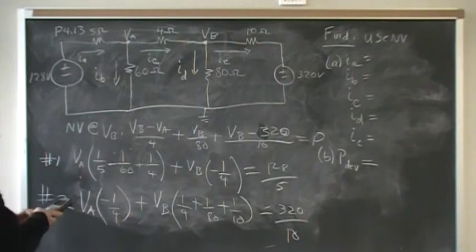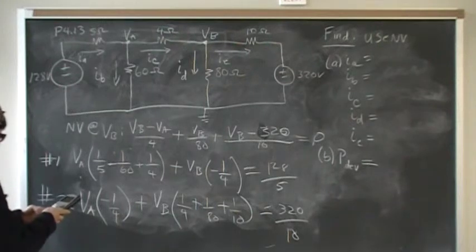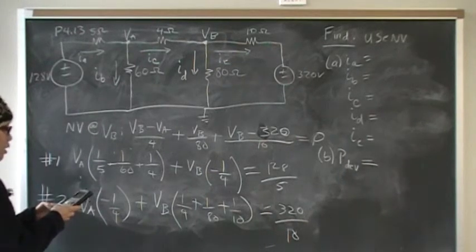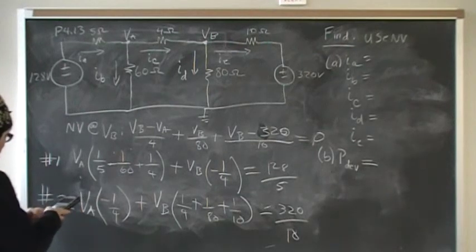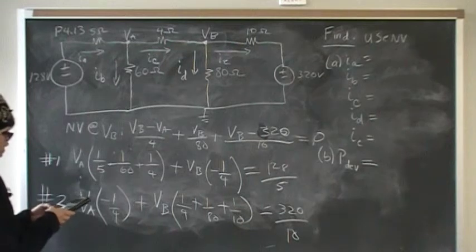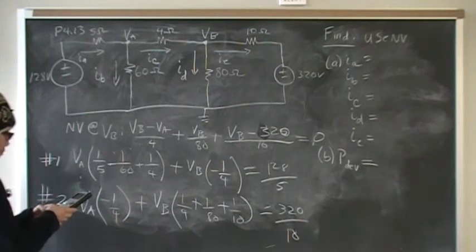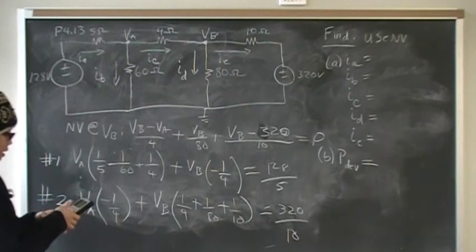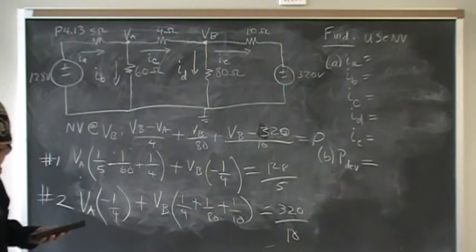One divided by five plus one over 60 plus one over 4, and let your calculator do all the work, because it's too easy making mistakes on this. VB, negative one divided by four, and then 128 divided by five. Second equation, negative one divided by four, one-fourth plus 1 over 80 plus 1 over 10, 320 over 10. Solve it. And just to make sure I get the same answer as I did the first time.